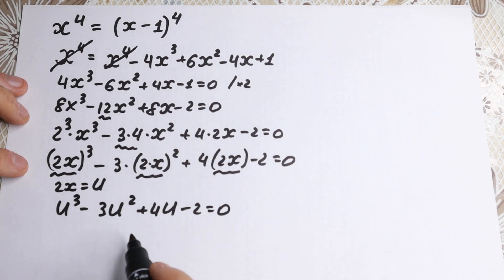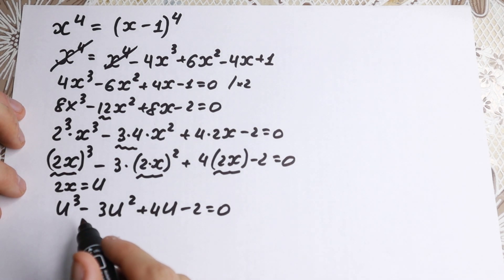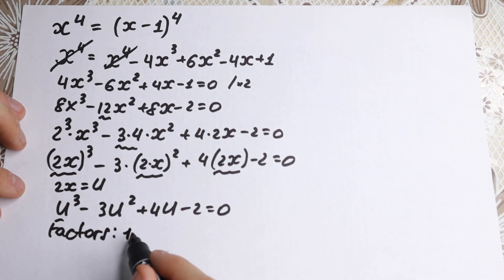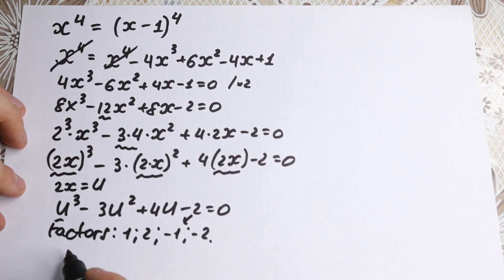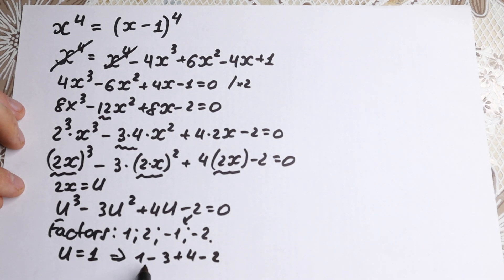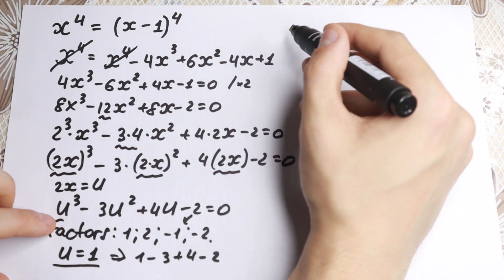With u equal to 2x, we have the cubic equation: u cubed minus 3u squared plus 4u minus 2 equals zero. There are many approaches to factor this. Let's try the rational root theorem — the factors of 2 are: 1, 2, minus 1, minus 2. By inspection, plugging in u equals 1: 1 minus 3 plus 4 minus 2 equals 0. So u equals 1 is a root.